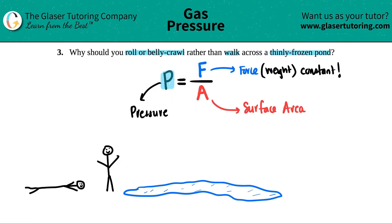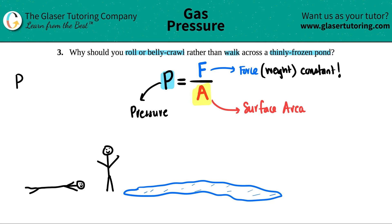Looking at the formula, pressure and area are inversely related — one is in the numerator and the other is in the denominator. If they were both in the numerator, they'd have a direct relationship. So pressure and surface area are inversely related: if I increase my surface area, the pressure I exert decreases, and vice versa — lower surface area means much higher pressure.